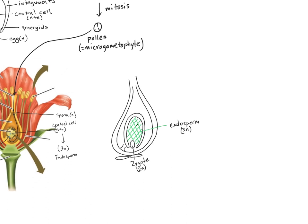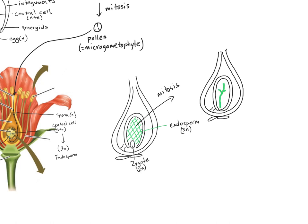That zygote is going to continue to grow by mitosis and eventually form an embryo. And that embryo is the next sporophyte generation, and so it's diploid and surrounded by nutritive tissue which is 3N, called the endosperm.